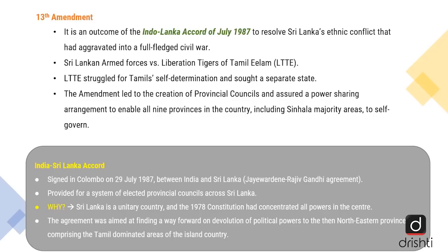Now we move towards the key concepts, and of course we are going to focus on the 13th Amendment. The 13th Amendment is an outcome of the Indo-Sri Lanka Accord of July 1987, aimed at resolving Sri Lanka's ethnic conflict that had aggravated into a full-fledged civil war. The India-Sri Lanka Accord was signed in Colombo on 29th July 1987 between the Prime Ministers of India and Sri Lanka, also referred to as the Jayawardene-Rajiv Gandhi Agreement.